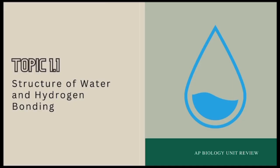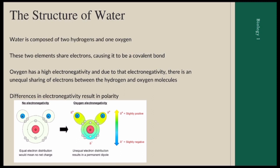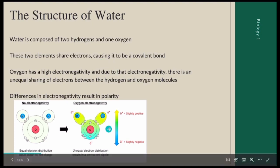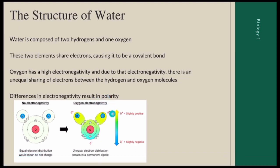This is the first unit, the Chemistry of Life, and the first topic is the structure of water and hydrogen bonding. The structure of water is pretty unique. It's composed of two hydrogens and one oxygen. The hydrogens are positive and the oxygen is negative, and they share a covalent bond. This is an unequal sharing of electrons — the electrons are more pulled towards oxygen than towards hydrogen, so hydrogens are slightly positive and oxygen is slightly negative.